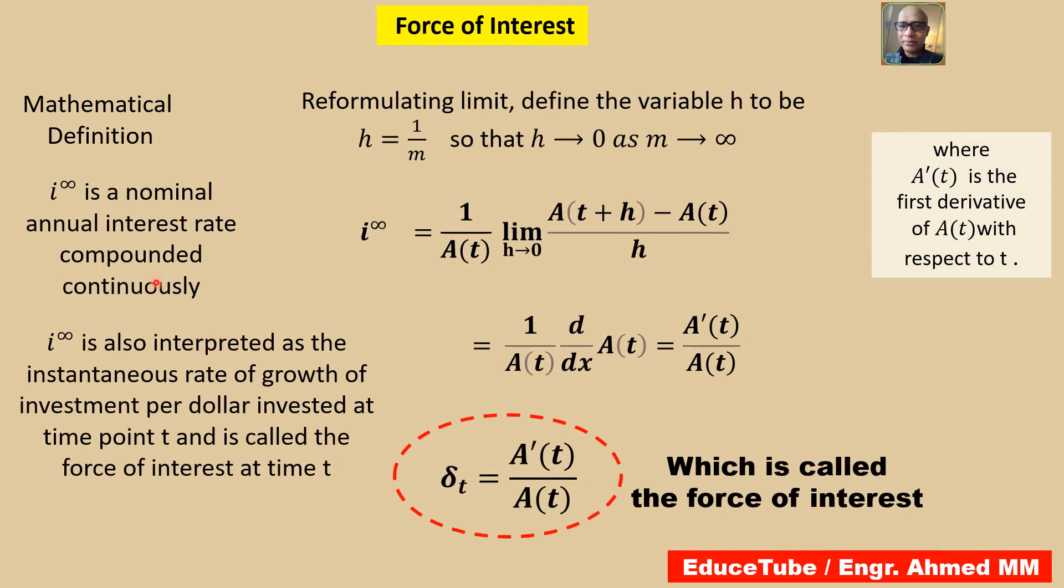Now the limit can be reformulated. If it is reformulated and if we define the variable h to be h = 1/m, then h tends to 0 as m tends to infinity.